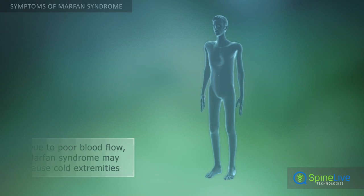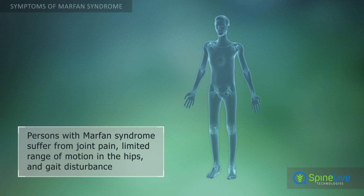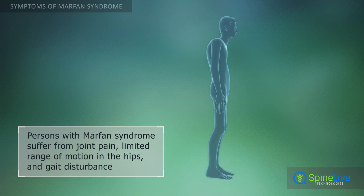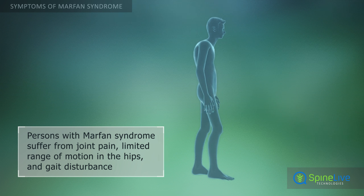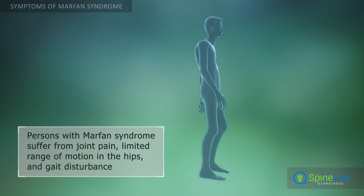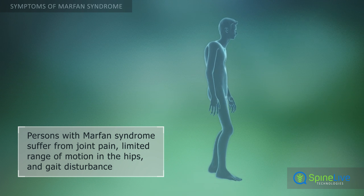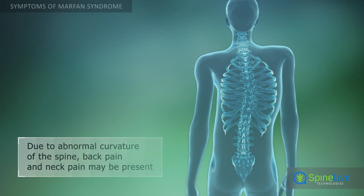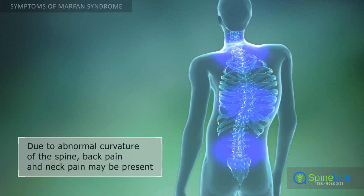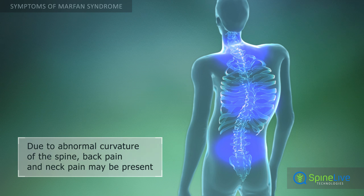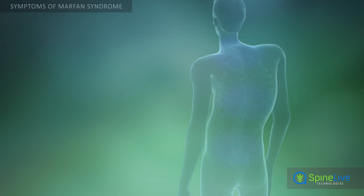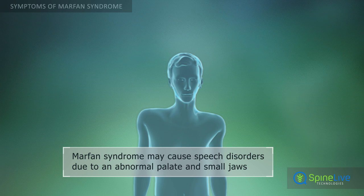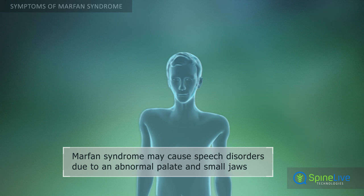Cold arms, hands, and feet can also be linked to Marfan syndrome because of inadequate blood circulation. The skeletal system is affected by early osteoarthritis and cartilage changes, leading to symptoms like joint pain and limited range of motion. The hips are most commonly affected first. Back pain and neck pain caused by abnormal curvature of the spine and chest deformities may also occur.